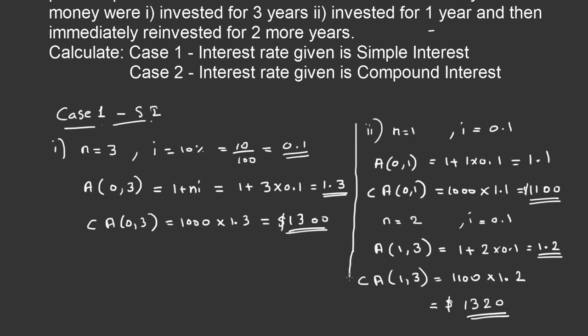Let us compare case 1 and case 2. In question 1, the accumulated amount after three years is $1,300. In question 2, the accumulated amount after three years is $1,320. So the course of action — withdrawing the amount at the end of period 1 and redepositing it immediately for another two years — changes the accumulated amount.